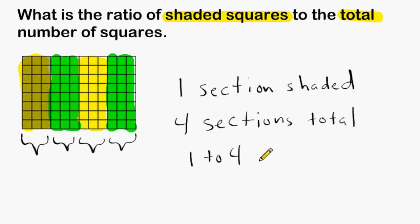So we would say the ratio of shaded squares to the total number of squares is one part to every four parts.